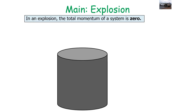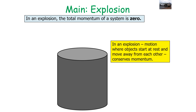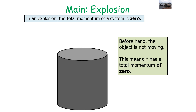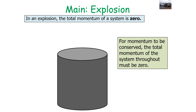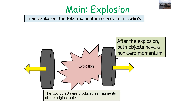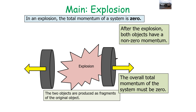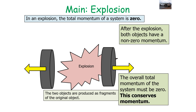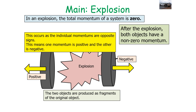In an explosion, the total momentum of the system is zero because the objects start at rest and then move away from each other. Beforehand the object is not moving, so it must have a total momentum of zero. For momentum to be conserved, the total momentum throughout must also be zero. After the explosion both objects have non-zero momentum, but they must add together to equal zero to conserve momentum.